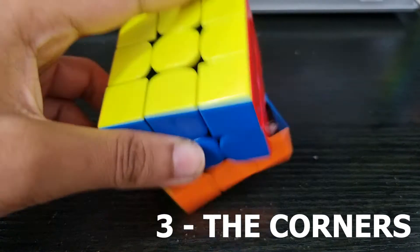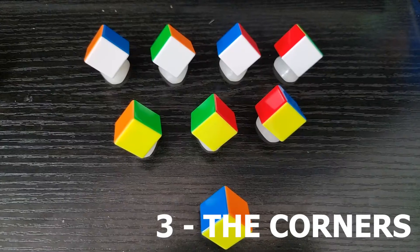Finally, the corner pieces which have three stickers on them. They move around the cube and there are eight of them.